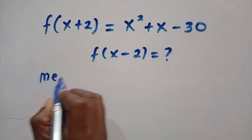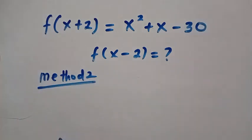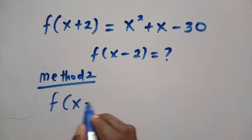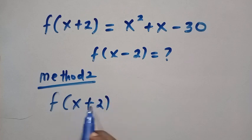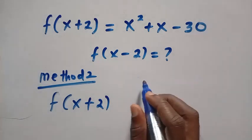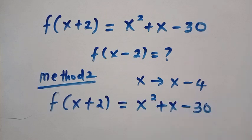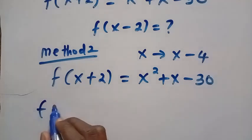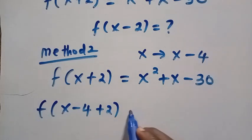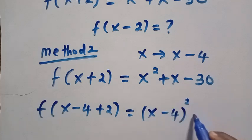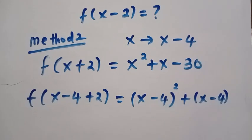Here is method 2. In this second method, I'm going to be applying the replacement of the values directly instead of form manipulation. Here we have f(x+2). If I want to get x minus 2 here, it's just like we'll be replacing every single x with x minus 4. Let me write the question as x squared plus x minus 30. Then every single x will be replaced by x minus 4, then plus 2. So this equals (x-4) squared plus (x-4) minus 30.